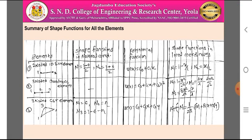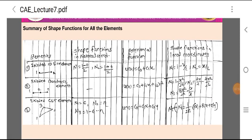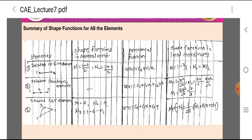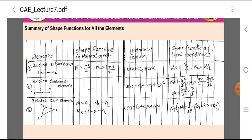Element 1 is the two-noded one-dimensional bar element, represented by a line element having two nodes. The shape functions in natural coordinate system are N1 = (1 − ε)/2 and N2 = (1 + ε)/2. The polynomial function for this linear element is U(x) = C0 + C1·x. The shape functions in local coordinates are N1 = 1 − x/L and N2 = x/L.